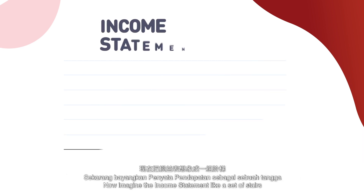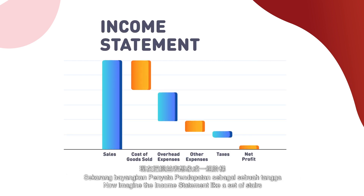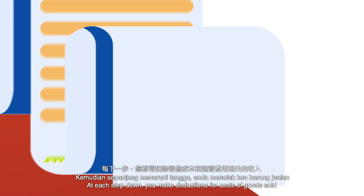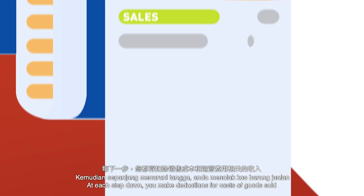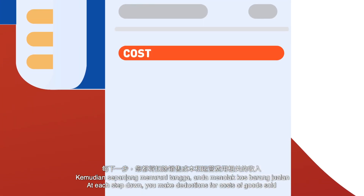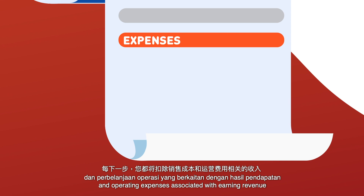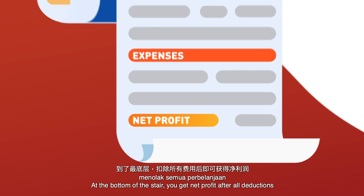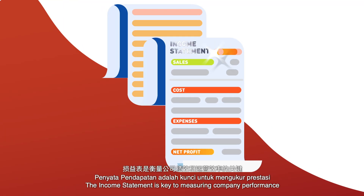Imagine the income statement like a set of stairs. You begin at the top with the total amount of sales made over a specific period. At each step down, you make deductions for costs of goods sold and operating expenses associated with earning revenue. At the bottom of the stair, you get net profit after all deductions. The income statement is key to measuring company performance and operational efficiency.